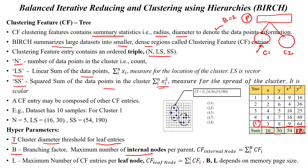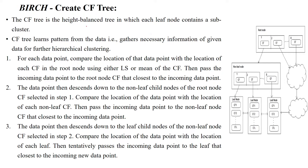So only two clusters are allowed to this particular parent. L denotes the maximum number of clustering feature entries per leaf node. For example, if L equals 2, only two data points are allowed in each cluster — data point 1 and data point 2. Based on that, we create the clustering feature tree with a height-balanced approach.